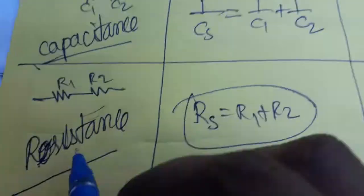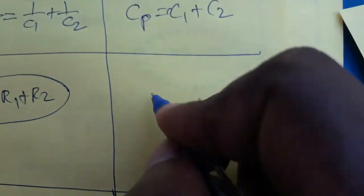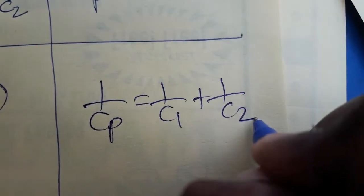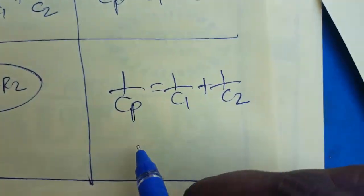For capacitance connected in parallel, c_parallel = c1 + c2. But for resistance connected in parallel, 1/Rp = 1/r1 + 1/r2.